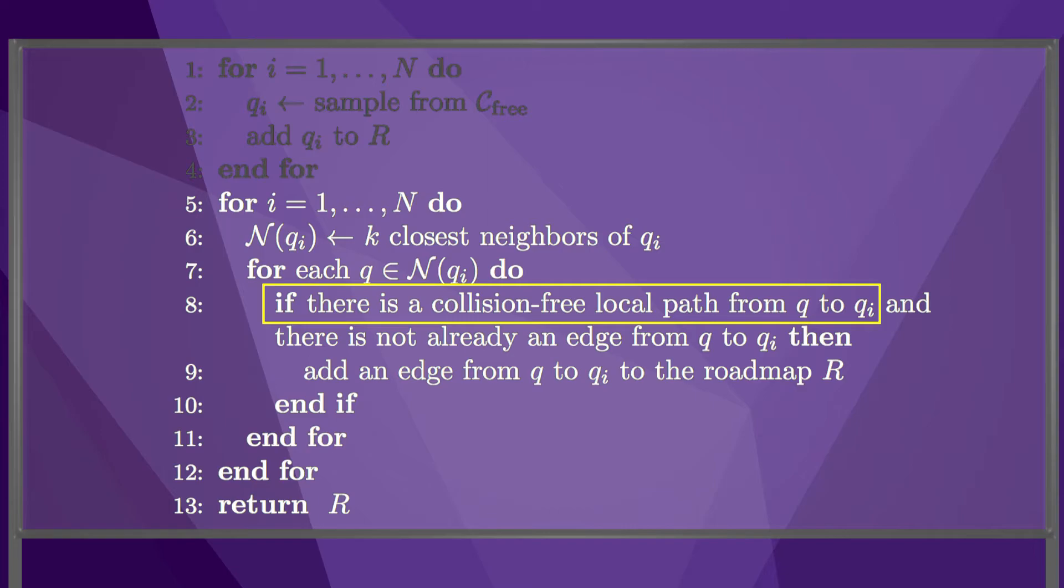To do this, we use a very simple and fast local path planner which does not attempt to avoid obstacles. For example, the planner could just choose a straight line between the original node and the neighbor. We then check whether this path is collision-free, and if so, we add an edge between the two nodes.